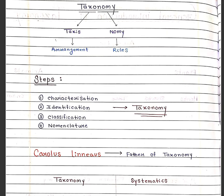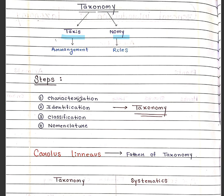Taxonomy, as we have studied, is made up of two words — Taxis and Nomi. Taxis means arrangement and Nomi is the rule. The steps of taxonomy are: characterization, identification, classification and nomenclature.